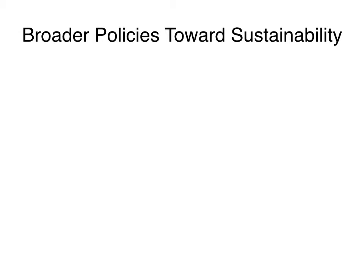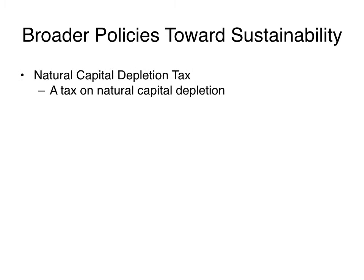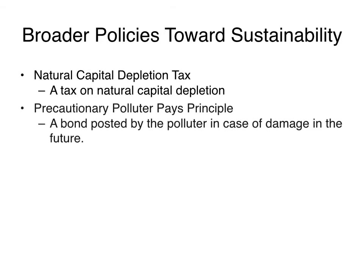Broader policies towards sustainability include a natural capital depletion tax — a tax on the depletion of natural resources to reduce the amount of depletion. Another very interesting one is the precautionary polluter pays principle — a bond posted by the polluter in case of damage into the future. The person puts up an insurance policy; if they really deplete the resource, they will pay into the future for the damage caused in the present.